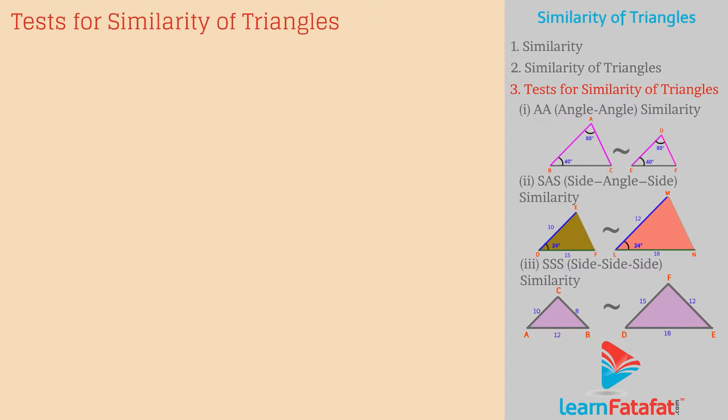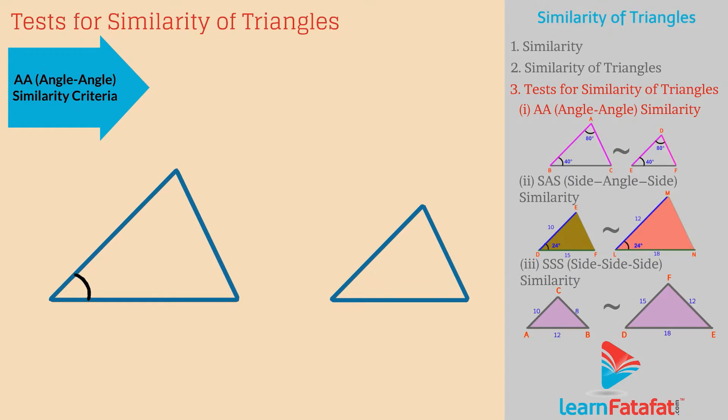Tests for similarity of triangles. AA Angle-Angle Similarity Criteria. If two angles of one triangle are respectively equal to two angles of another triangle, then the two triangles are similar.